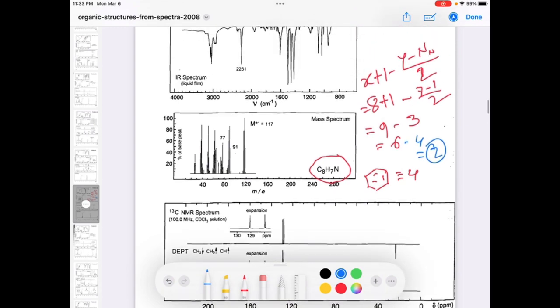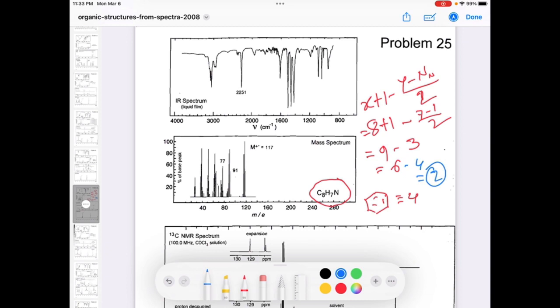6 minus 4 equals 2, so we have to find out that degree of unsaturation. Since we have nitrogen in this molecular formula, let's see the IR. In the IR, I told if you have nitrogen, first look for the primary amine. Primary amine means NH2.